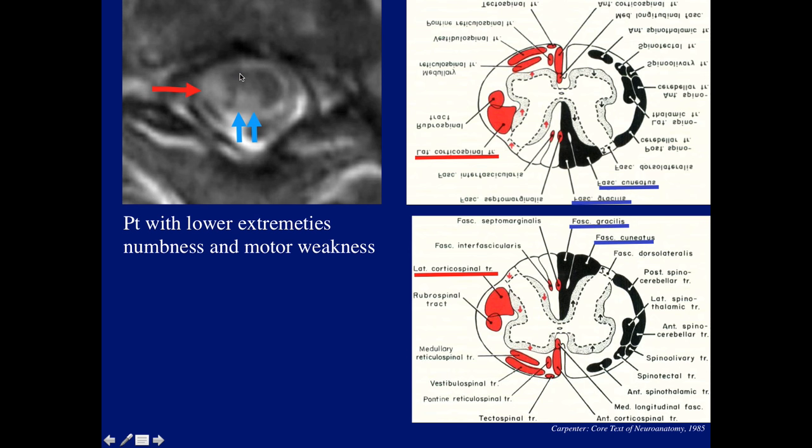Here's a patient with lower extremity numbness and motor weakness: numbness because of involvement of the fasciculi, and this is the region of the lateral corticospinal tract, explaining the motor weakness and the numbness in the posterior columns.